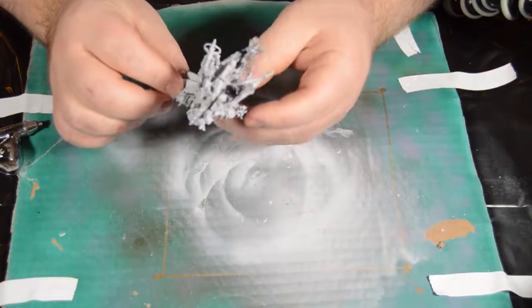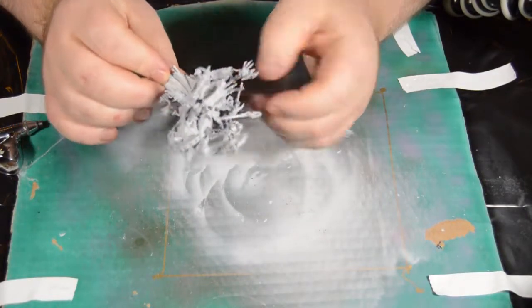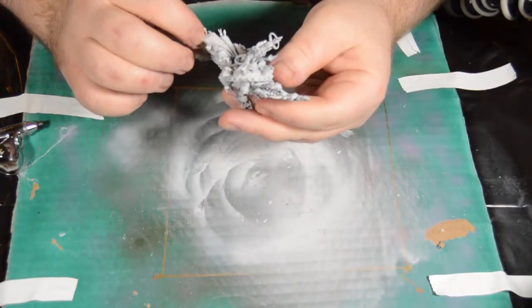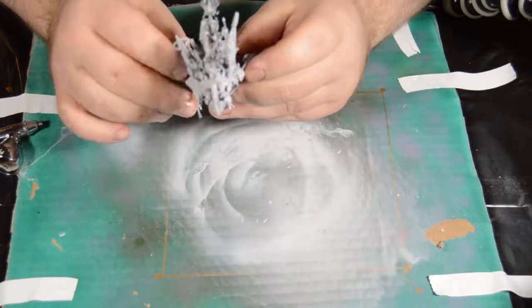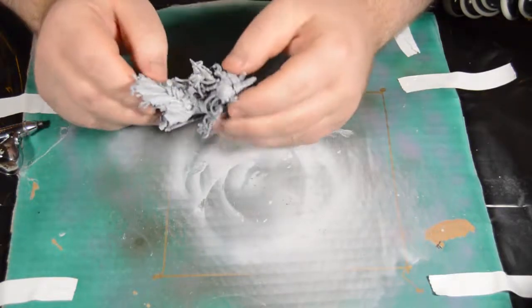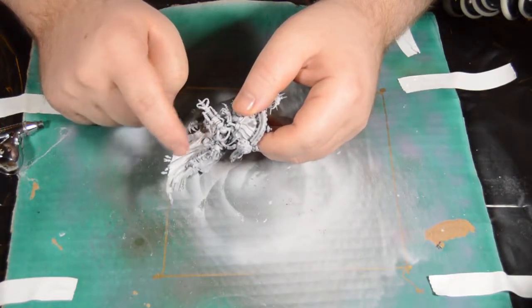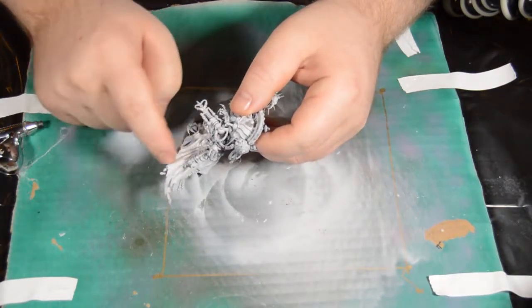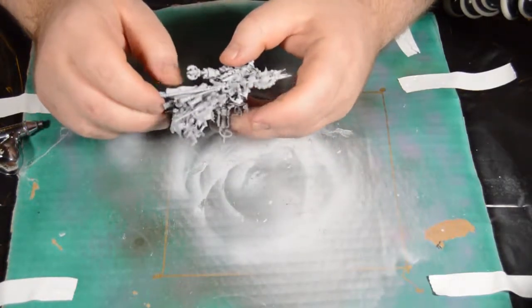So today we are actually going to start real painting! All of this has just been built up to this point. First thing we're going to do is take our airbrush and work on the robes. We're going to lay in some pre-shading in the folds so we don't have to worry about it too much in the future.